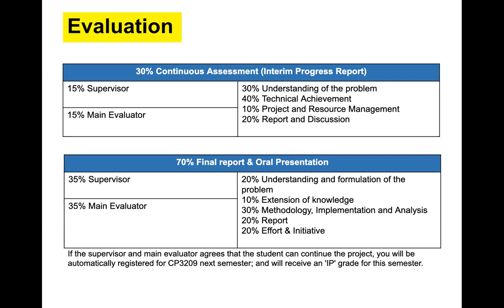In the first semester, you're thinking about the literature review, figuring out the problem you're interested in, understanding how to frame it, and reading related work. At the end of that semester, you submit a continuous assessment report covering those ideas and how to improve the state of the art. 15% comes from your supervisor and 15% from your main evaluator. A lot of the criteria relates to your understanding of the problem as you start to formalize it.